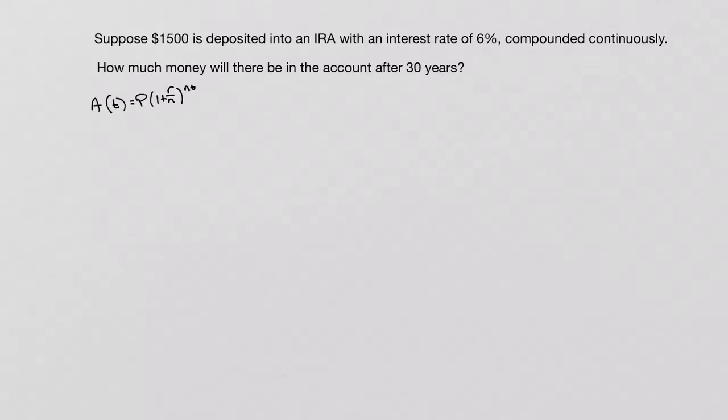Now here, when we were using that formula, n was whenever we were given a word like compounded monthly, compounded daily, and that would give us some sort of amount of time.